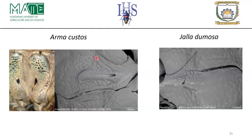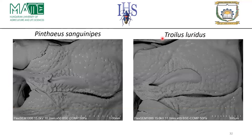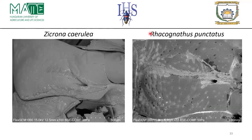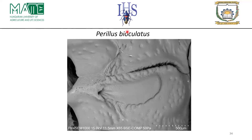These are the metathoracic scent efferent apparatus images from scanning electron microscopy for Arma custos and Zicrona domosa, as well as SEM images for Pentatoma and Troilus luridus, then for Zicrona caerulea and Rhacognathus punctatus, and finally Perillus bioculatus — all showing the morphological characterization and differences between these European Asopinae species.